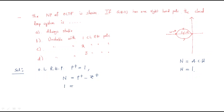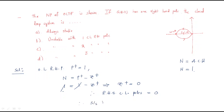Substituting: N equals 1 and P-plus equals 1. So Z-plus equals P-plus minus N equals 1 minus 1 equals 0. We are getting zero right-hand side closed-loop poles. Therefore, the system is stable — it is an always-stable system.